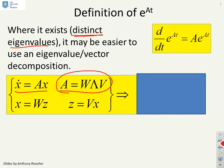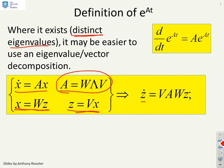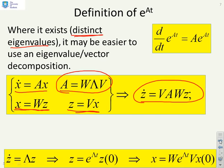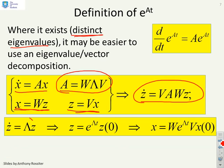So now, if I define a new vector z such that x equals Wz, or equivalently z equals Vx, I can substitute that into the expression above, and I will get this z dot equals VAW z. Now the advantage of doing that is that clearly, because V and W are the eigenvectors, left eigenvectors, you're going to end up with z dot equals lambda z, where lambda is diagonal.